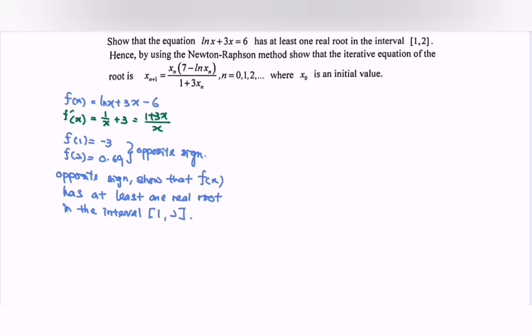Continue. Hence, by using the Newton-Raphson method, show that the iteration equation of the root is given, n equals 0, 1, 2, etc., where x₀ is the initial value.